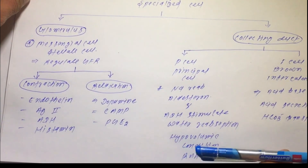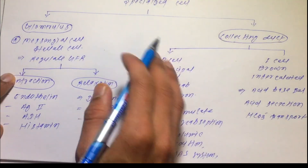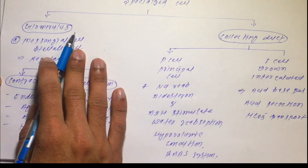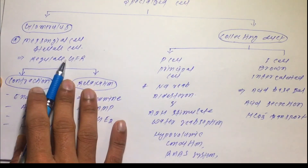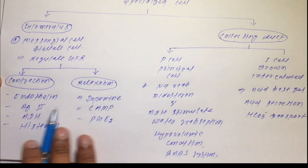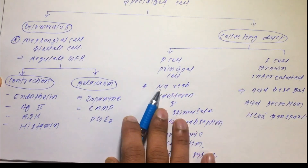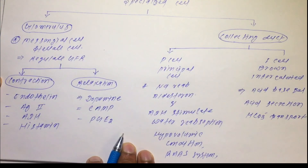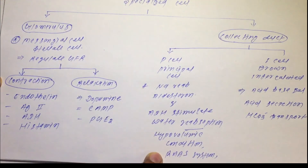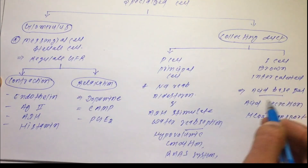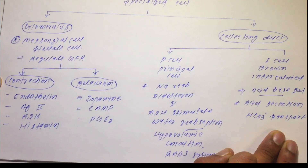Quick review: the specialized cells of the nephron are divided into glomerulus and collecting duct. The mesangial cell in the glomerulus is located between the basal lamina and endothelium, regulates GFR, and undergoes contraction and relaxation mediated by specific mediators. In the collecting duct, the principal cell handles sodium reabsorption via aldosterone and water reabsorption via ADH to compensate hypovolemia in the RAS system. The I cell manages acid-base balance through acid secretion and bicarbonate transport. Thanks for watching — please share and subscribe.